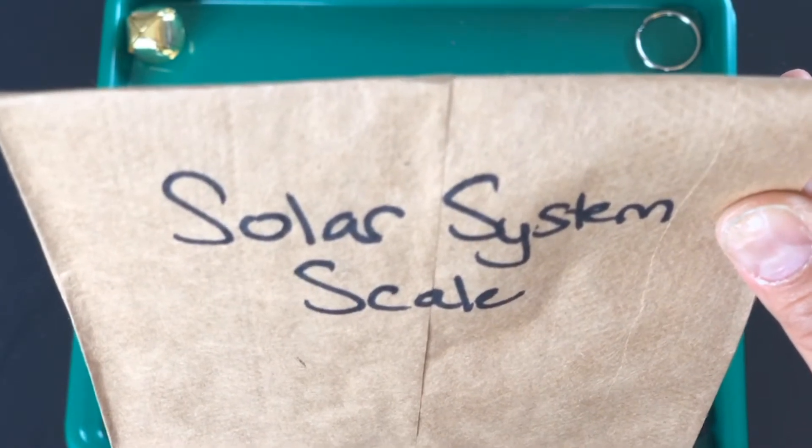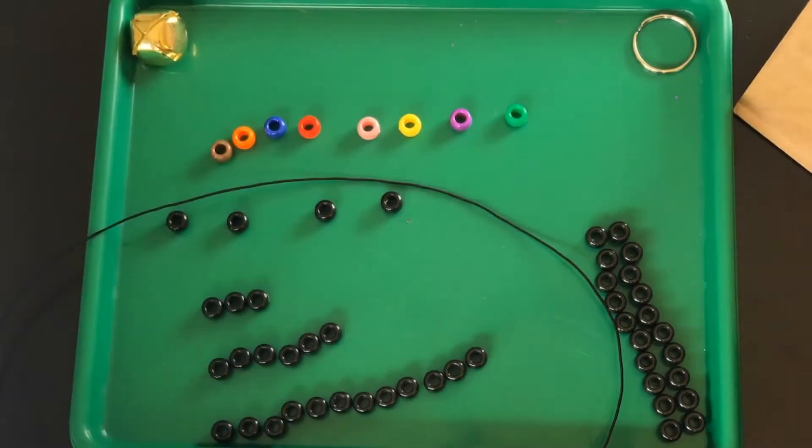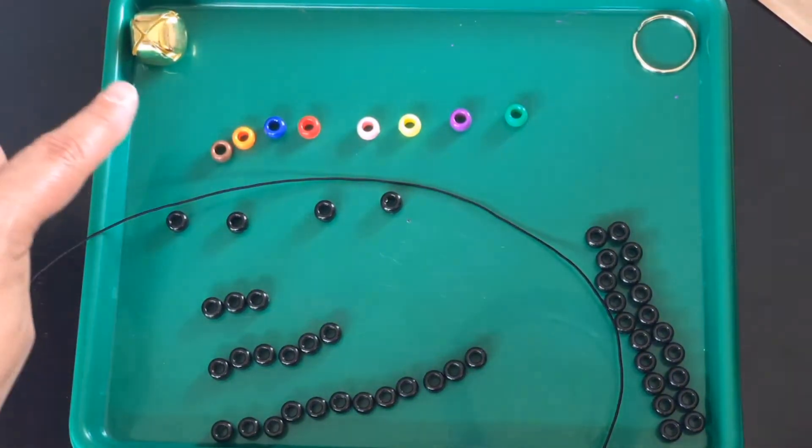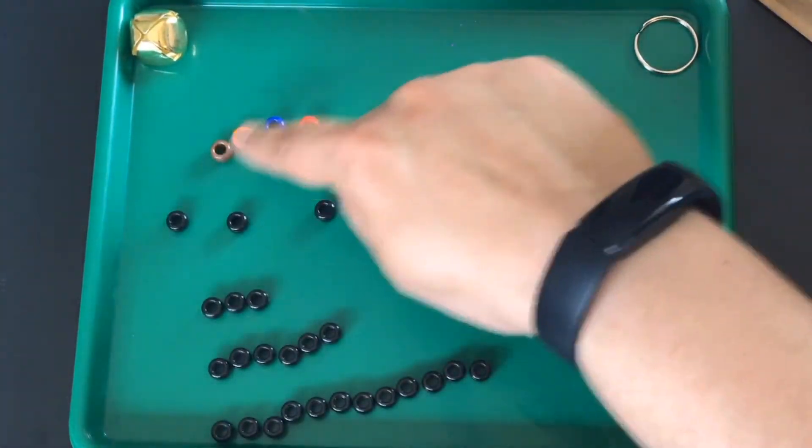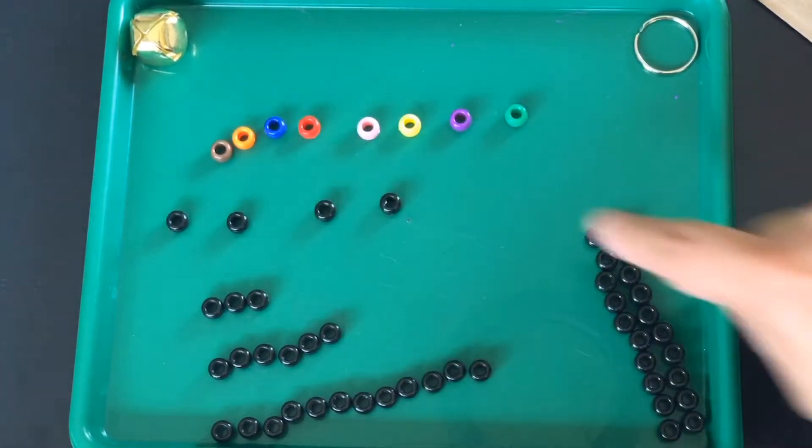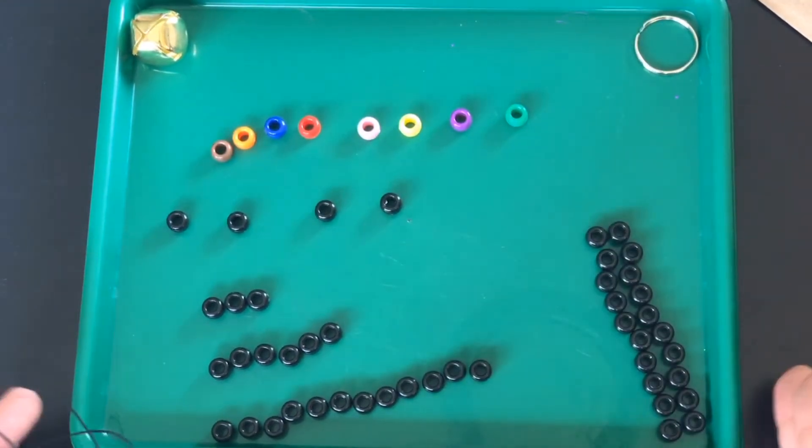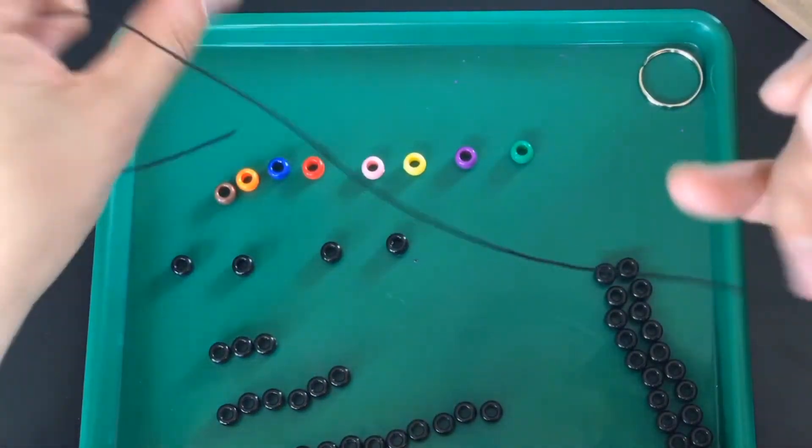Okay, here is the bag that you picked up from the Nature Center and here are the contents inside. We have written instructions, a jingle bell, a key ring, elastic cord, eight different colored beads, and 45 black beads.